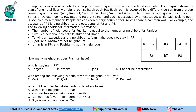Hello everyone, welcome to Aptitude Jab. This set says that eight employees were sent on-site for a corporate meeting and were accommodated in a hotel. The diagram shows the plan of one hotel floor with eight rooms, each room occupied by a different person.